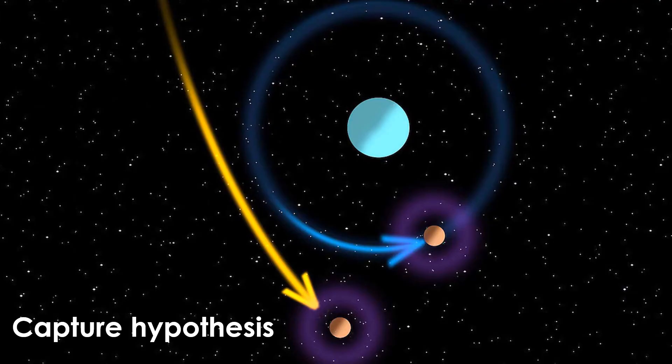With this in mind, another hypothesis has been proposed. This hypothesis suggests that the moon and Earth formed separately in different parts of the solar system. When they crossed paths, the Earth captured the moon with its gravitational pull, forcing it into the moon's current orbit. Scientists are generally skeptical about this hypothesis, because there is some doubt that the Earth would have had the energy necessary to prevent the moon from escaping its new orbit. The physics don't add up.